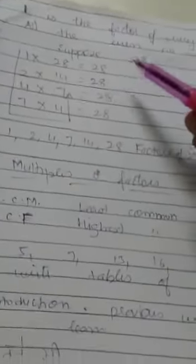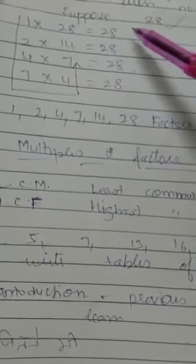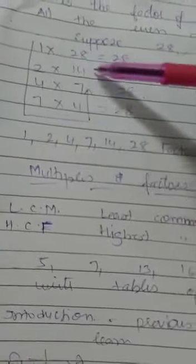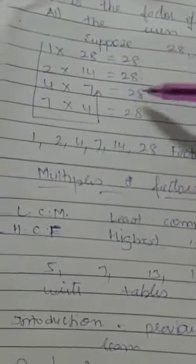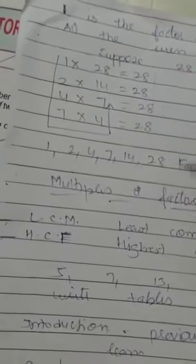So if we see the factors of 28, then how do we find factors? First we wrote multiples of 28: 1 into 28, 2 into 14, 4 into 7, 7 into 4. These all give 28.